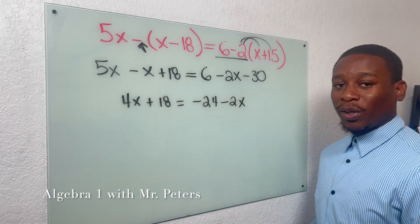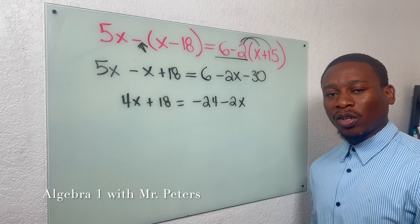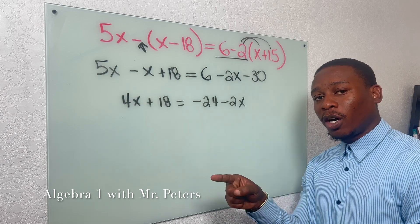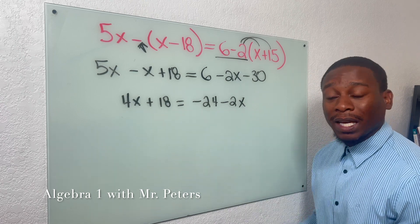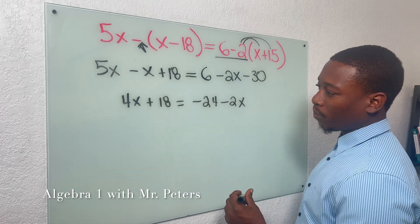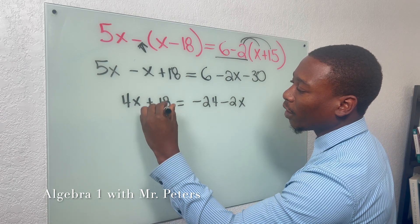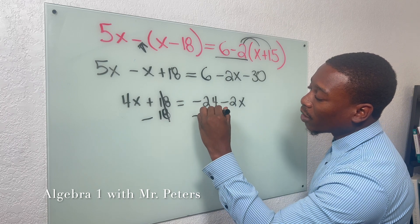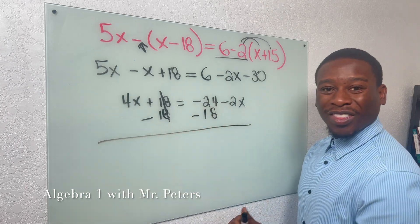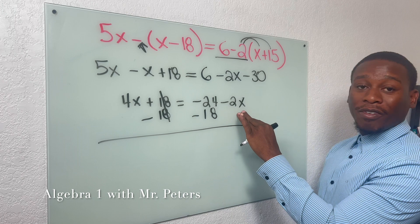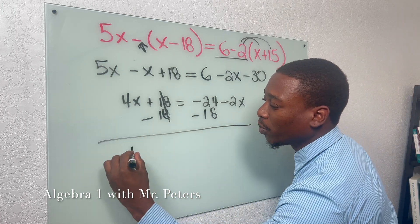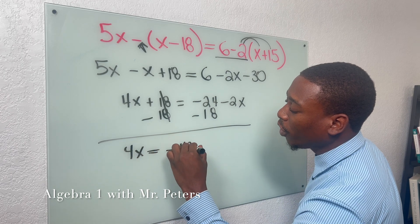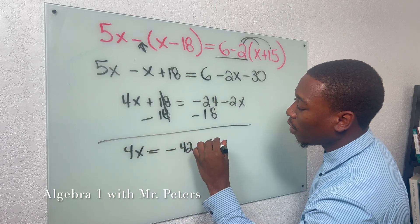Now at this step, we're going to understand what we do to one side, when we start canceling out values, what we do to one side, we have to do to the other. Just don't forget that because I see students forget. So this is what I mean. So I'll subtract 18, and then sometimes students will forget to subtract 18 from its like term, or they'll try to subtract it from the variable. Just remember, they're not like terms. We're going to get 4x is equal to negative 42 minus 2x.